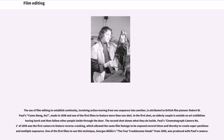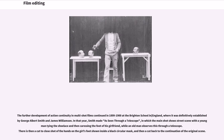The further development of action continuity in multi-shot films continued in 1899-1900 at the Brighton School in England, where it was definitively established by George Albert Smith and James Williamson. In that year, Smith made a scene through a telescope, in which the main shot shows a street scene with a young man tying the shoelace and then caressing the foot of his girlfriend, while an old man observes this through a telescope. There is then a cut to a close shot of the hands on the girl's foot shown inside a black circular mask, and then a cut back to the continuation of the original scene.